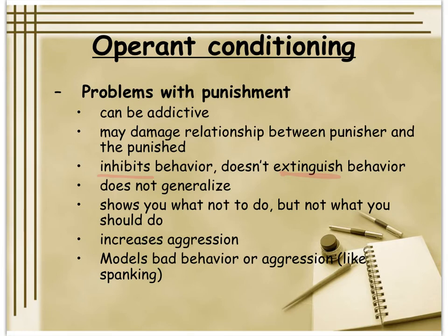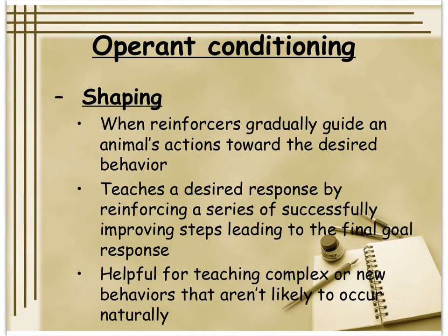With a small class and two teachers that system was manageable. The goal is still learning, so enough reinforcement should be built in to help with the learning process. All of this falls under the idea of shaping in operant conditioning. Shaping is the big umbrella for where this all fits: when reinforcers gradually guide an animal's actions toward the desired behavior, you're reinforcing a series of successfully improving steps leading to the final response and ignoring things that are not what you're looking for. It's helpful for teaching behaviors that are not likely to occur naturally.